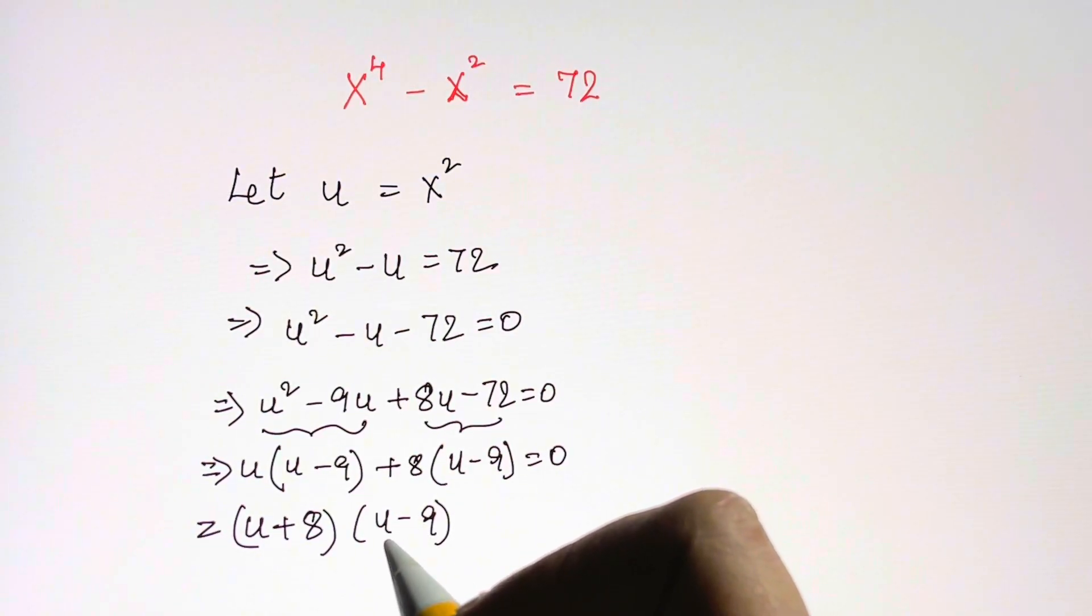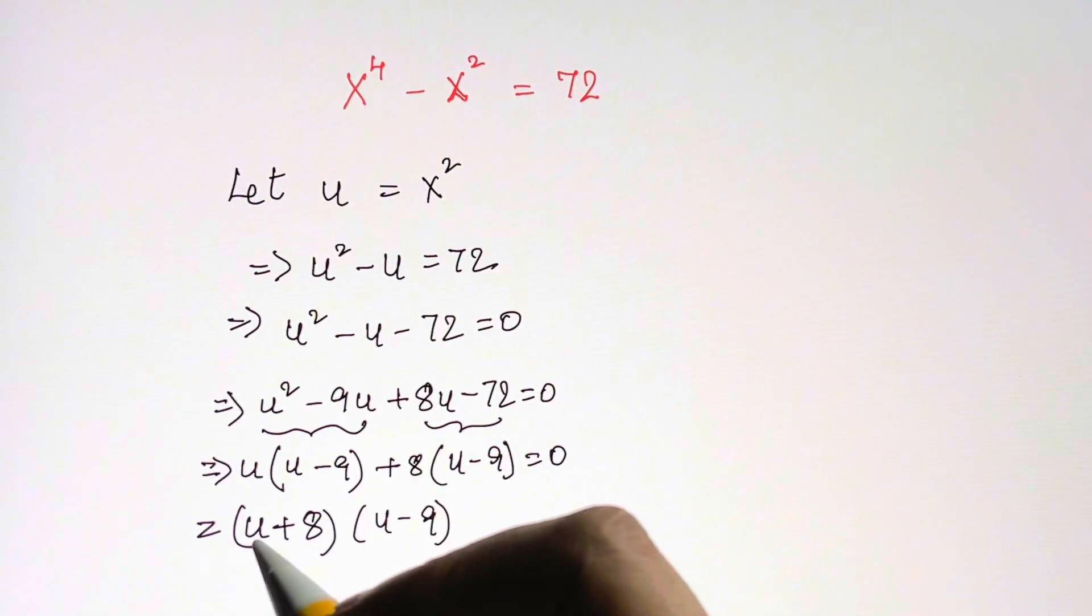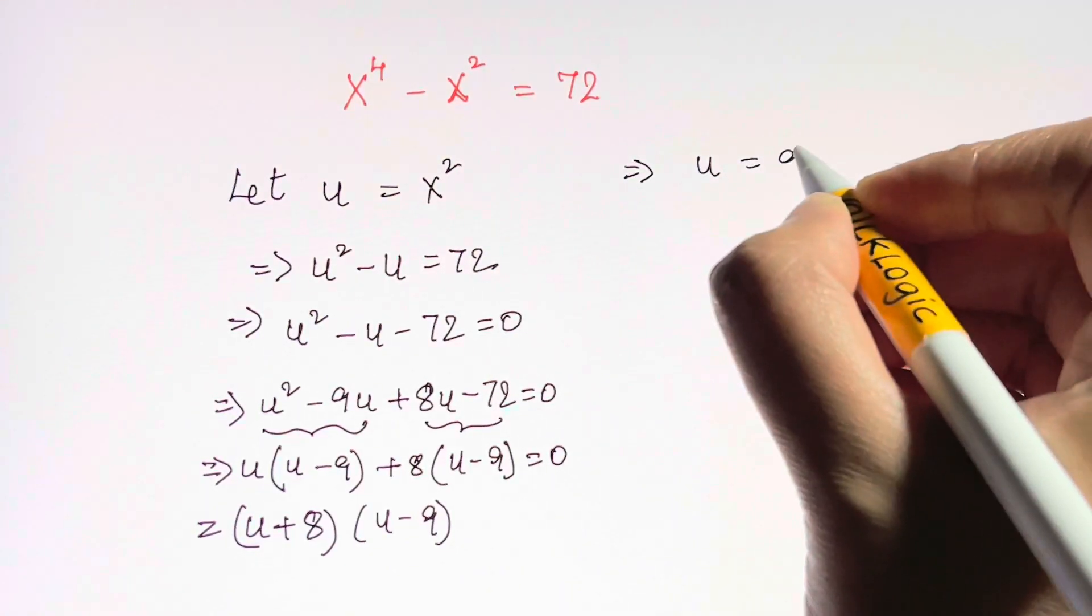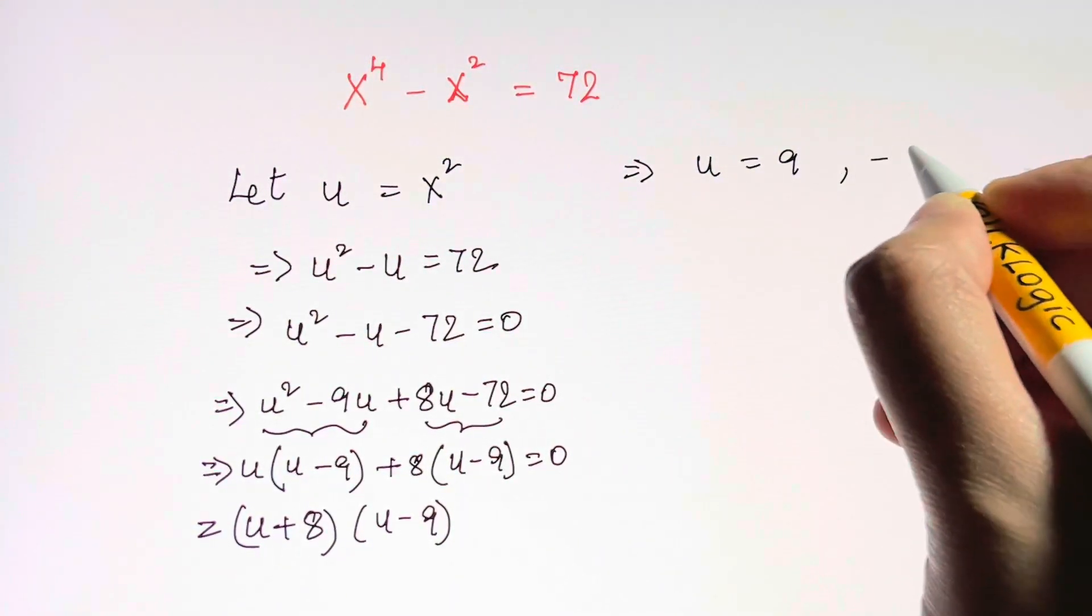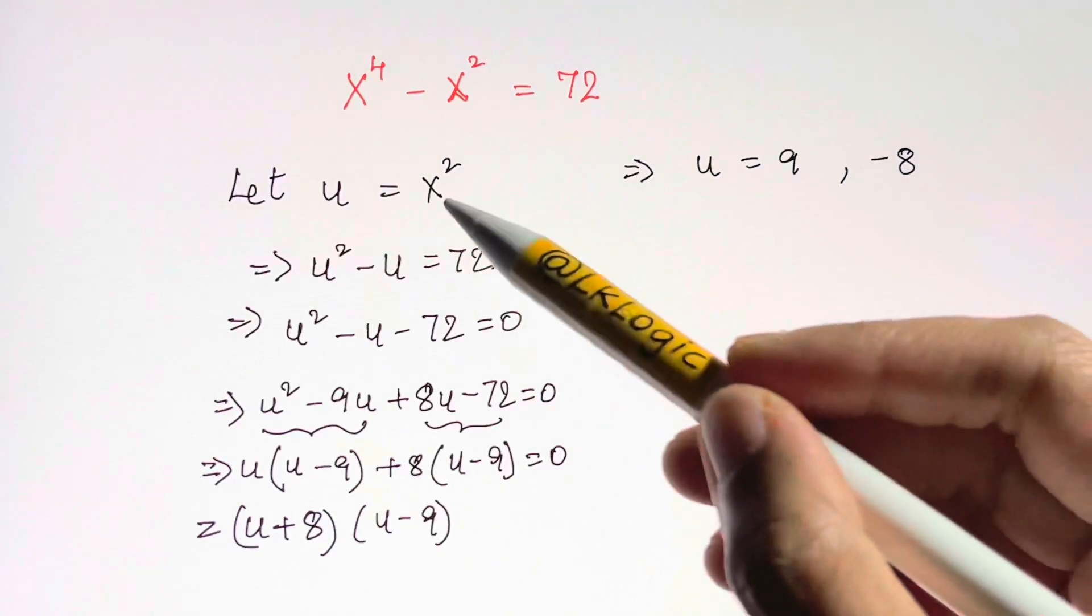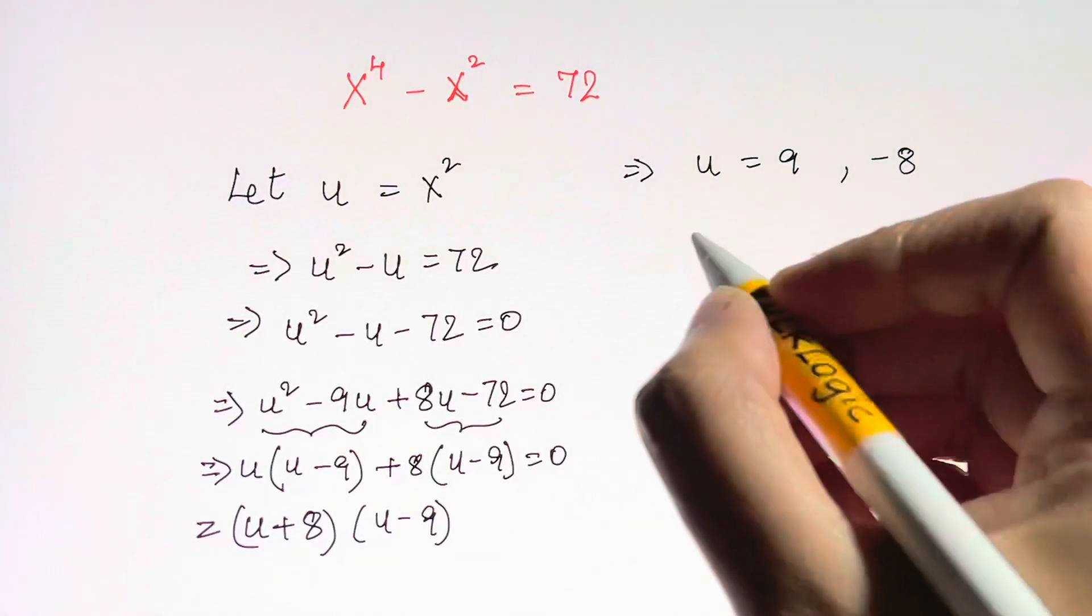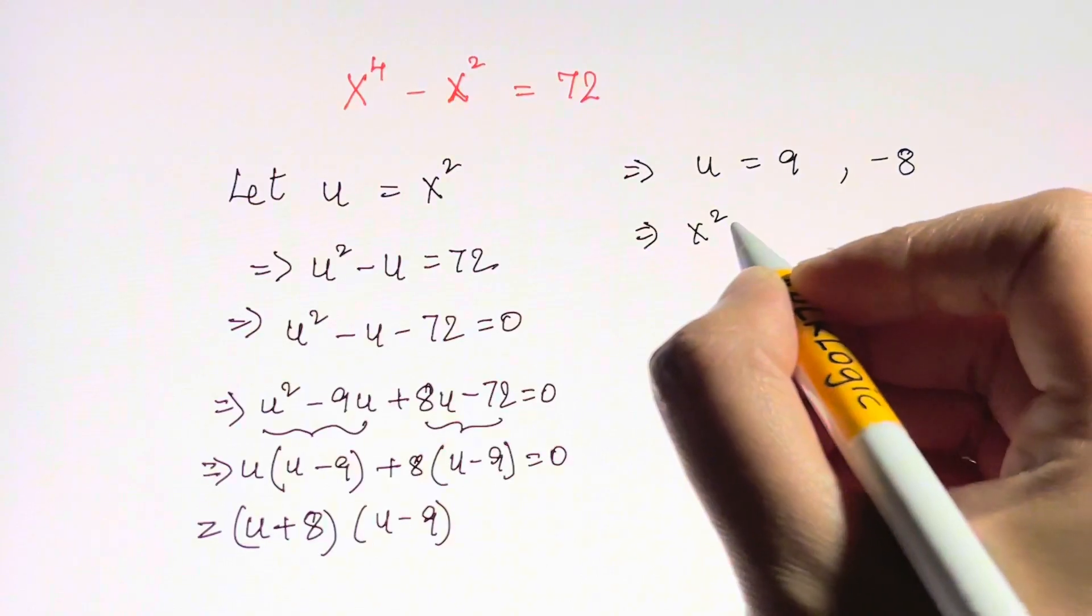u is equal to 9 comma negative 8. Now we know that u is equal to x squared, so let's put it back. x squared is equal to 9, and here x squared is equal to negative 8.